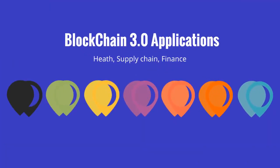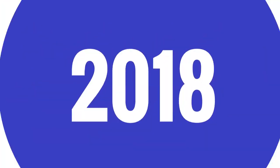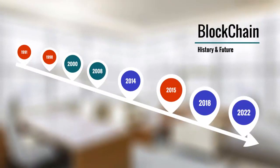In blockchain 3.0, platforms like Ethereum and Hyperledger can be used for different types of applications — whether it is health, supply chain, finance, medical, government records, or land registries. Everywhere where different people are involved, blockchain can be used. The era of blockchain 3.0, where we are currently living, came into existence around 2018.